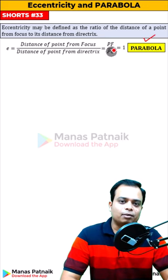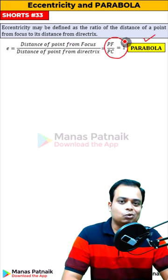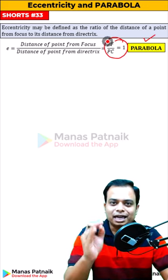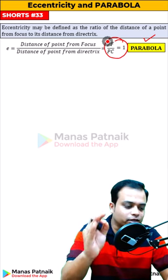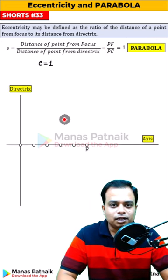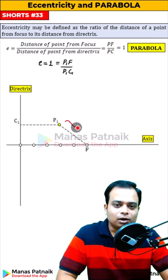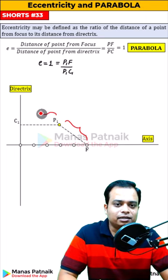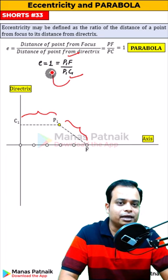The eccentricity of a parabola is always a constant and is equal to 1. Can you see the point moving or following this rule? Watch — let me mark a point over here, calculate the distance from the focus and the distance from the directrix, plug them in, and you are going to get it as 1, because the numerator and denominator are the same.